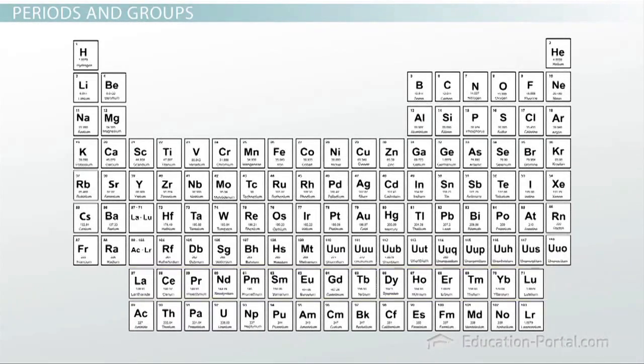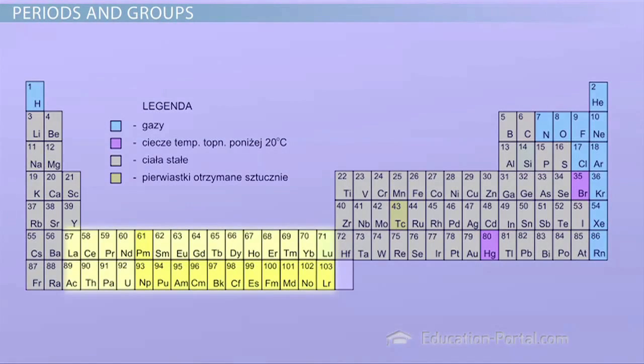The top row of that island is in the sixth period, and the bottom row is in the seventh period. Also, you may find that some periodic tables do show these two rows in their correct location.